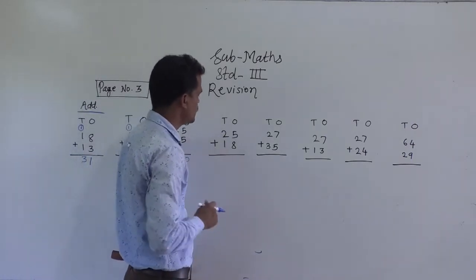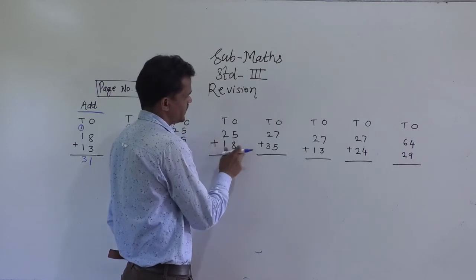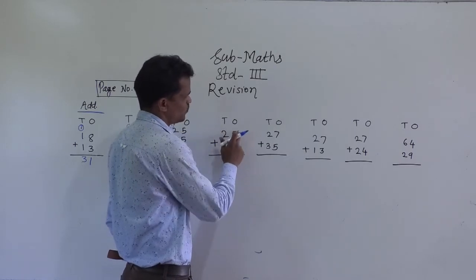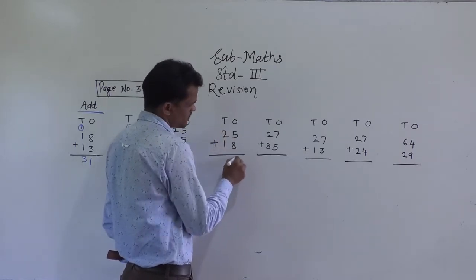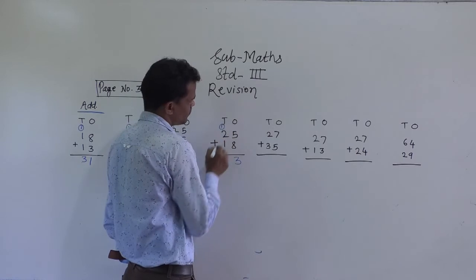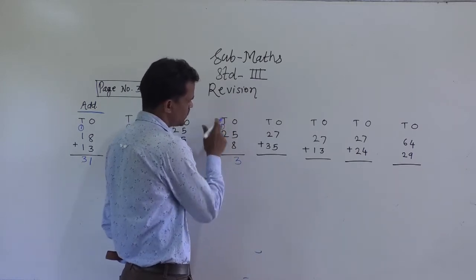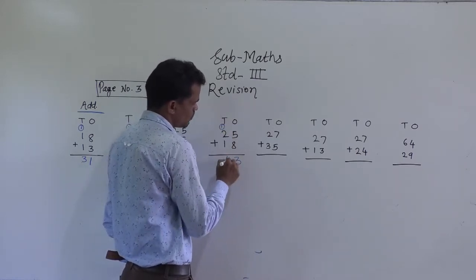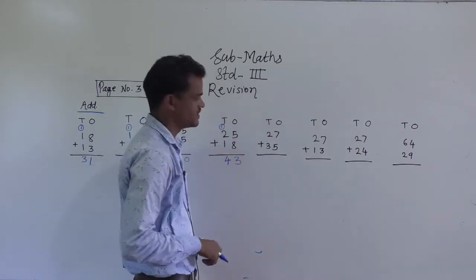Next example: 25 plus 18. 5 plus 8 is 13, so write 3 here and carry 1 forward. 2 plus 1 is 3, plus 1 carry is 4. So 43 is the answer.